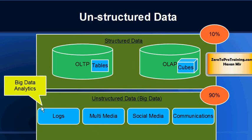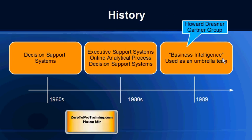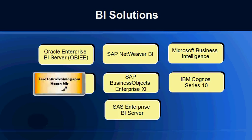The term business intelligence was first used in 1958. In the 1960s there was a breed of software called decision support systems, which were close in functionality to what BI offers today. In the 1980s we had executive support systems, online analytical processing systems, decision support systems, and others. It was in 1989 that the term business intelligence was used to capture all these systems under one umbrella. Today the term points not only to software but to the whole approach, including business procedures outside of software.